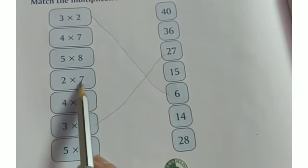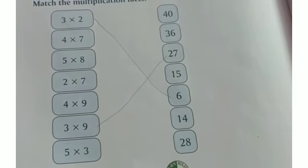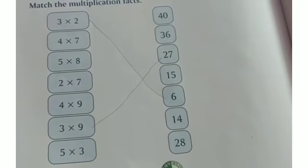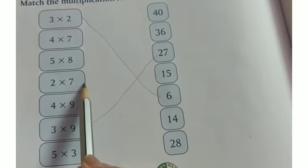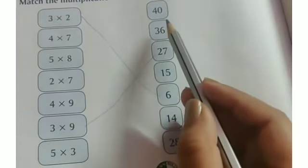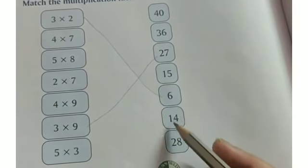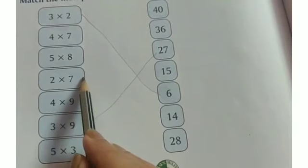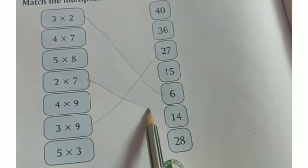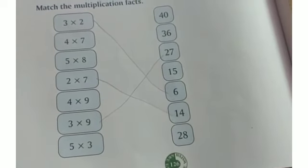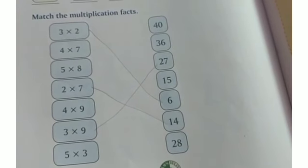Same, 2 into 7 — 2 1's are 2, 2 2's are 4, 2 3's are 6, 2 4's are 8, 2 5's are 10, 2 6's are 12, and 2 7's are 14. So 2 into 7 is equals to 14. Rest of the questions you will do in your homework.